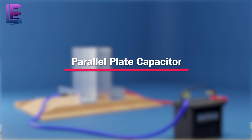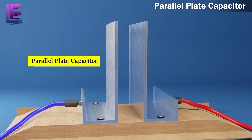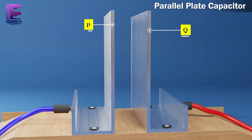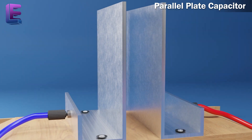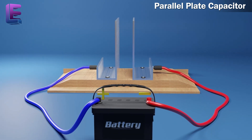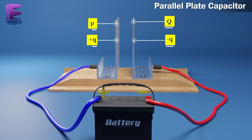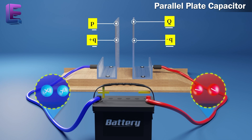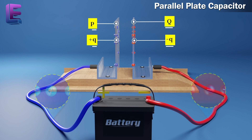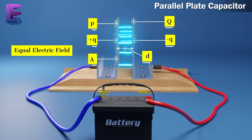Parallel plate capacitor. A parallel plate capacitor is the simplest form of capacitors. There are two parallel conductor plates, P and Q, in a parallel plate capacitor. Each plate has an area A. If they are located at a distance D from each other and connected to opposite poles of a battery, plate P will develop a charge of plus Q, while plate Q will develop a charge of minus Q. The charge is distributed equally on both plates. If distance D is much smaller than area A, a uniform electric field is formed.